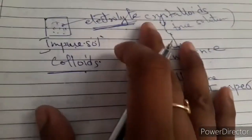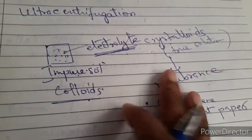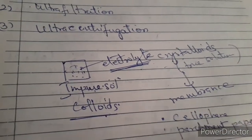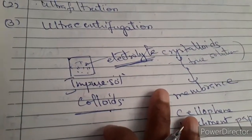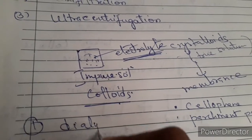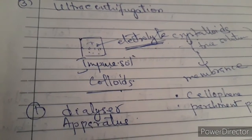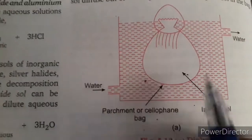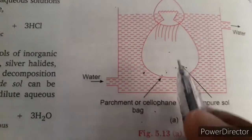So this is your membrane. Through this you will remove the impurities. You need an apparatus, and that apparatus is known as a dialyzer. The dialyzer contains a bag made of membrane material — you can use any suitable membrane. This bag contains the impure colloidal solution, which contains the impurities of electrolytes and the crystalloid particles.